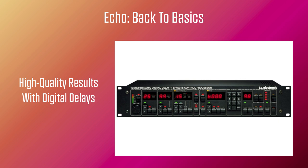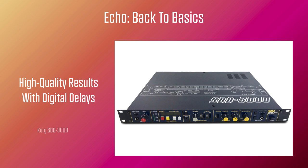Early high-quality digital delays included the Lexicon 1300S and the TC Electronic 2290, but soon all the major manufacturers came out with their own take on the effect, with the Korg SD3000 attracting some famous users, including U2's Edge.